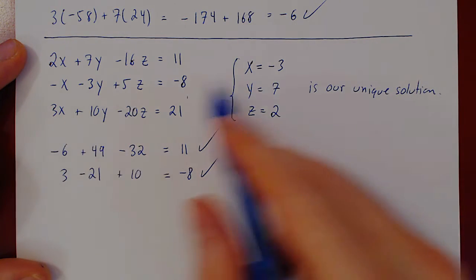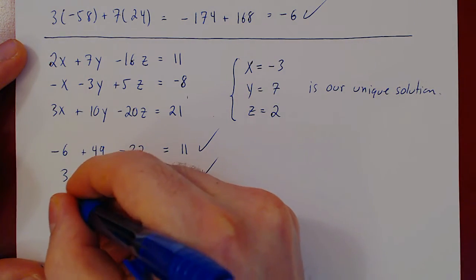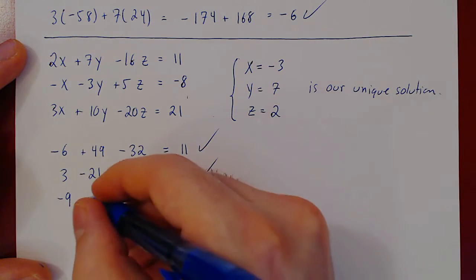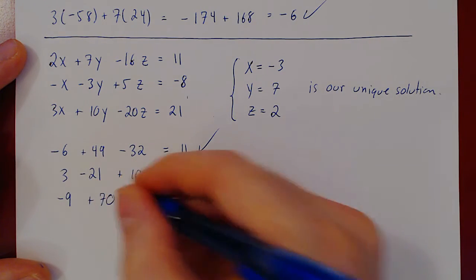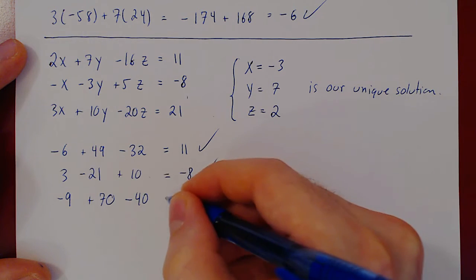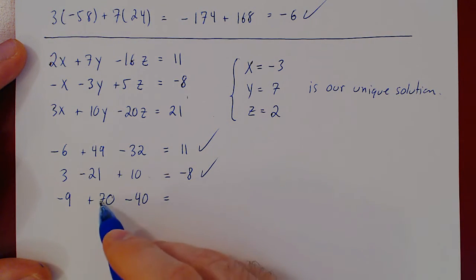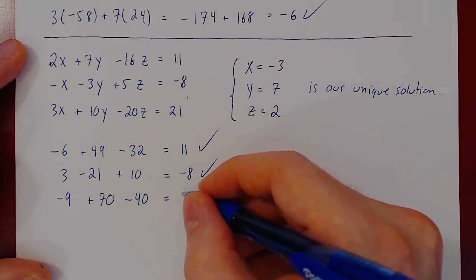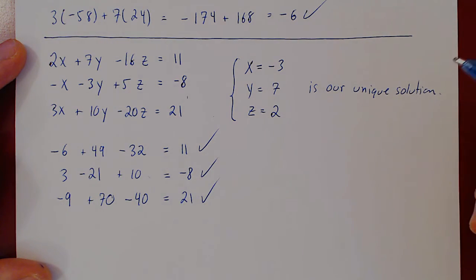Finally, third equation, 3 times x, negative 9, plus 10 times 7, plus 70, minus 20 times 2, minus 40. 70 minus 40 is 30, minus 9 is 21.